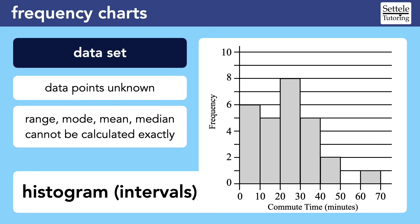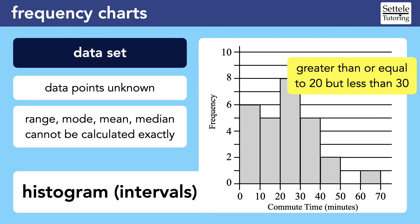Now let's look at a new dataset and a more advanced kind of histogram that lists values in intervals. The rectangles don't correspond to a particular value but spread across a range of values. For histograms with intervals, we don't know the exact data points, and because of that we cannot calculate the range, mode, mean, or median exactly. An SAT question will typically explain how the intervals work. For example, the tallest rectangle might include values greater than or equal to 20 but less than 30 — the eight values in it could be 20, 21, 22, and so on up to 29, but not 30.